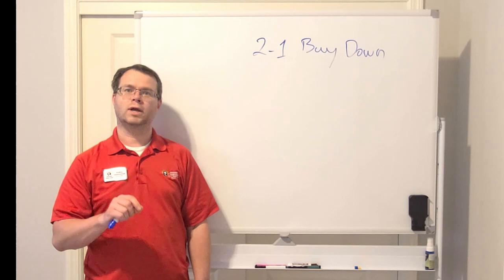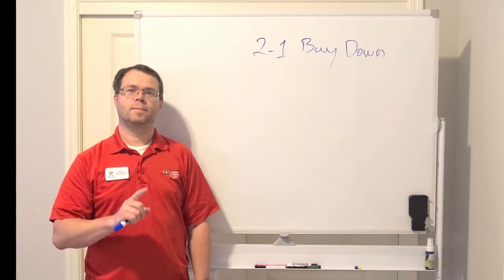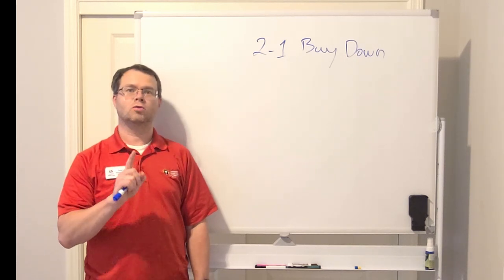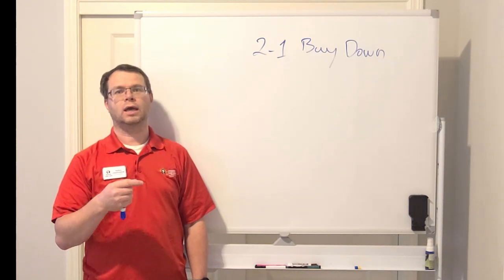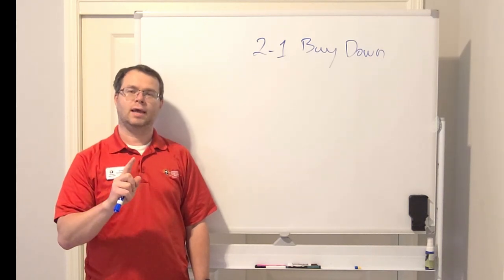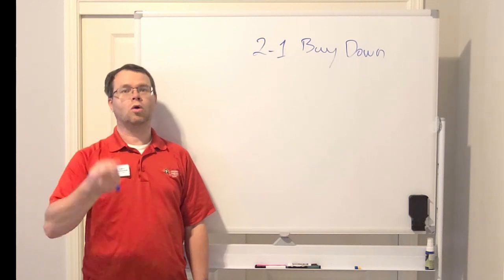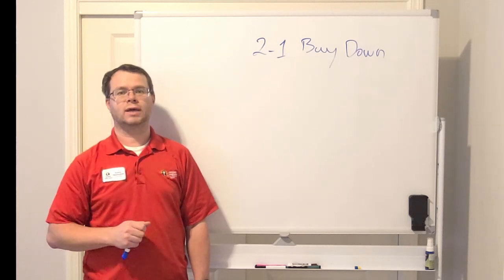A 2-1 Buy Down program is a program that offers to reduce your qualifying interest rate for the first two years of your mortgage, where within the first year, the rate goes down by 2%. And then within the second year, it goes down by 1%. And then for the third year, you go back to your original qualifying interest rate.